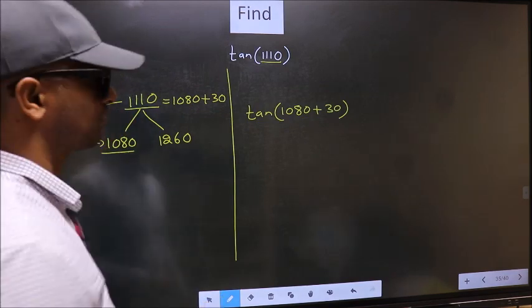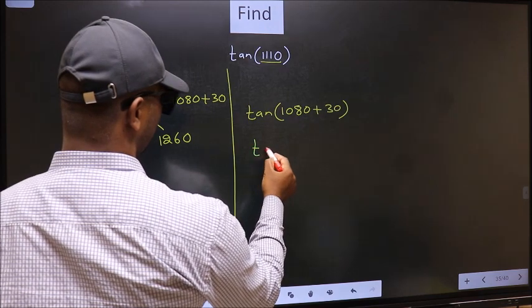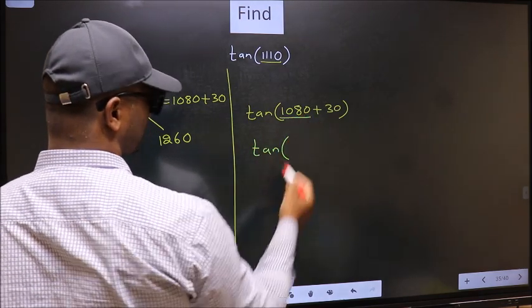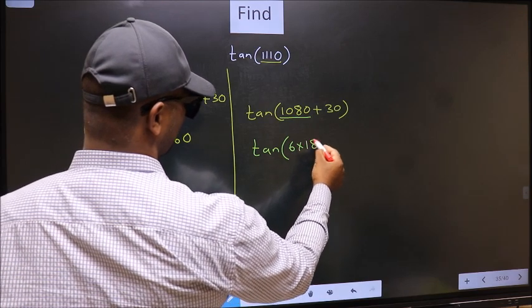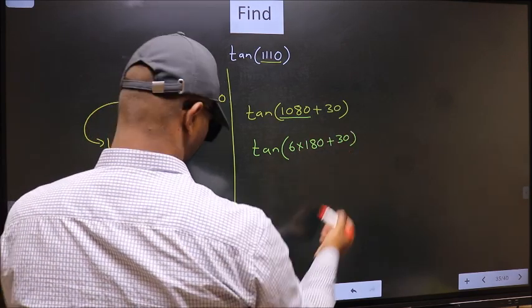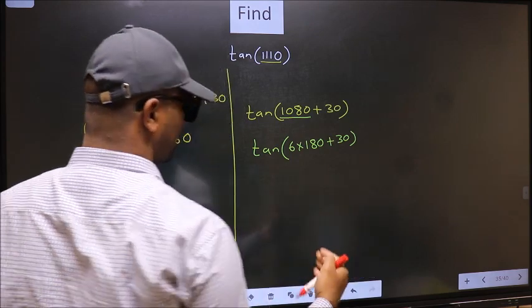Next, tan. In place of this, now we should write 6 times 180 plus 30.